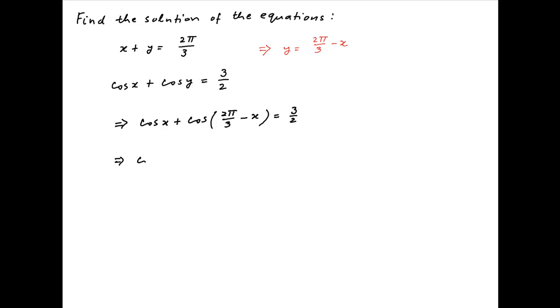Opening up the second term on the left hand side, we get cos(x) plus cos(2π/3)·cos(x) plus sin(2π/3)·sin(x) is equal to 3/2.